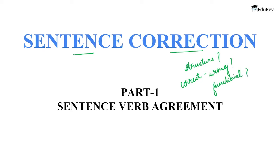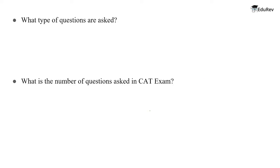What is needed in sentence correction questions is understanding the different parts of a sentence. Let us start with subject-verb agreement. But first, we need to know what type of questions are asked in the CAT exam. In each question, a sentence is given and a part of it is underlined. You have to choose the correct option that corrects any errors observed in the underlined fragment.